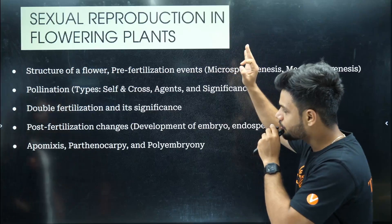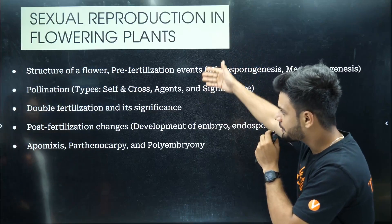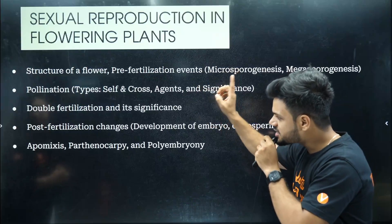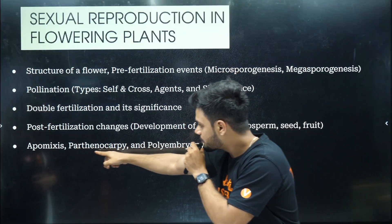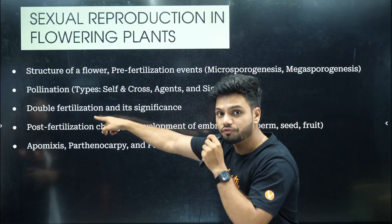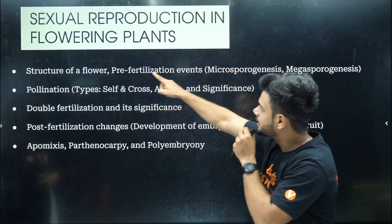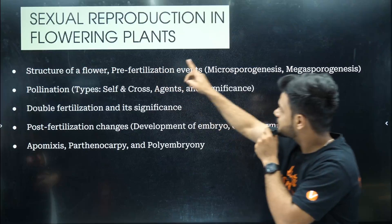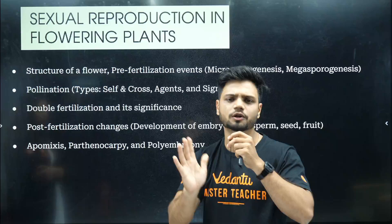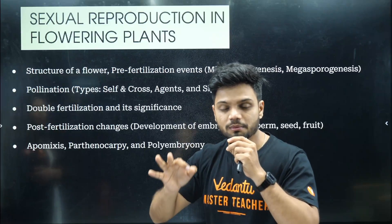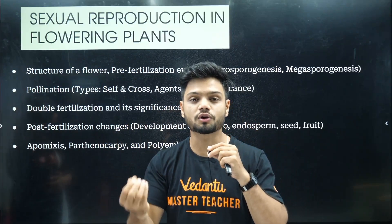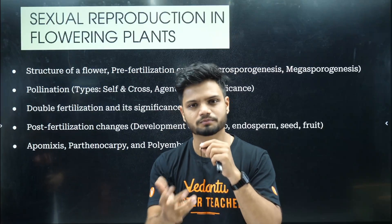Sexual reproduction in flowering plants. The most important topics are right here. Five topics should be asked. All of these can be asked as one-mark questions. This is a three-mark or five-mark question. Then pre-fertilization, microsporogenesis, megasporogenesis — again, two-mark, three-mark questions. If you have a five-mark, they'll ask you a diagram. Structure of your anther or structure of your flower.